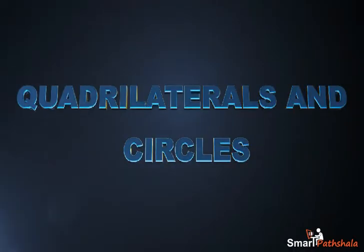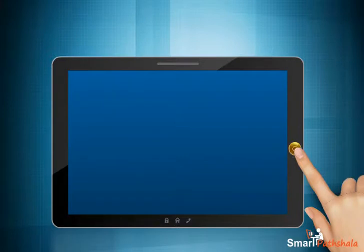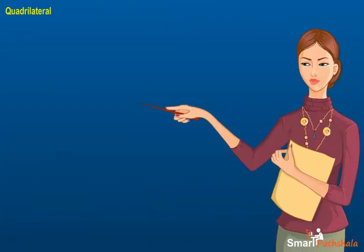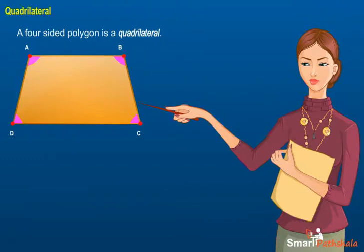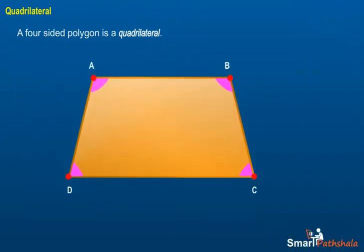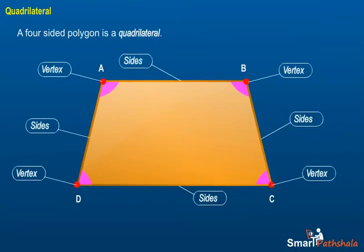Quadrilateral. A four-sided polygon is a quadrilateral. It has four sides, four vertices and four angles. The vertices are named in a cyclic manner.